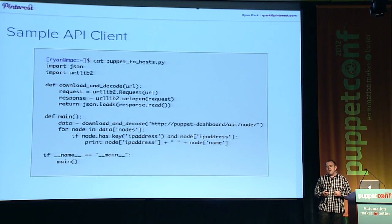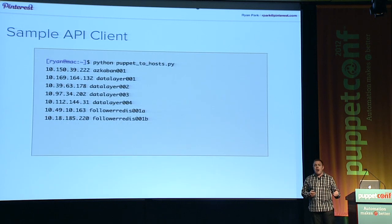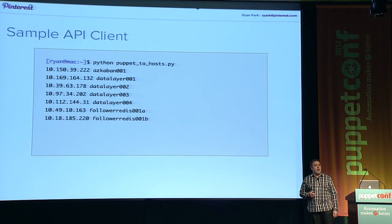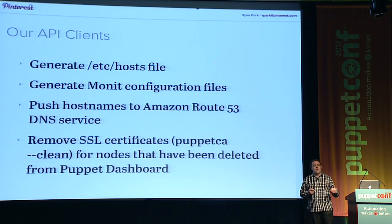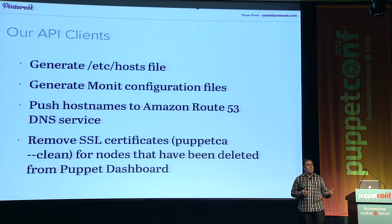Here's an example client we wrote that generates an /etc/hosts file through this API. The Python script is really only about a dozen lines of code, but it's able to pull all that data out of the API — out of the Puppet Dashboard and stored configs database — and generate a simple /etc/hosts file. Once you have the ability to do that in just a dozen lines of code, we can use that data to configure a lot of other systems. In addition to the /etc/hosts file, we generate configuration files for Monit, our monitoring system, to make sure all servers are up and responding on the expected ports.